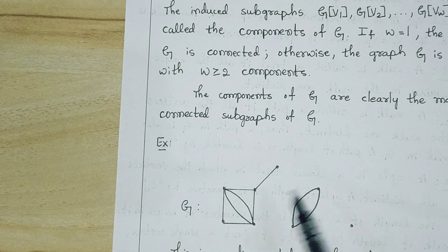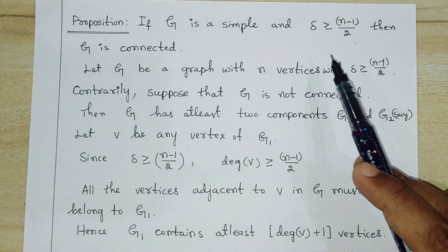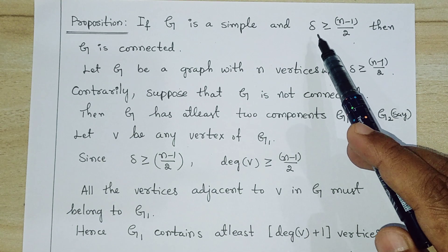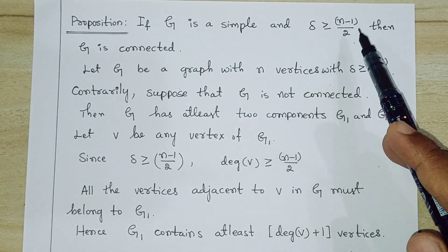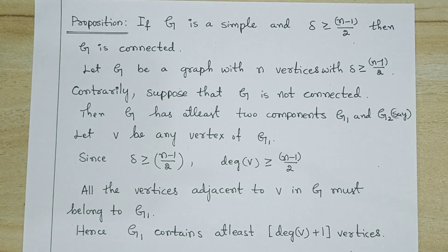Let me prove this proposition: if G is a simple graph with minimum degree δ(G) ≥ (n−1)/2, then G is connected. Recall that delta (δ) denotes the minimum degree of the graph.